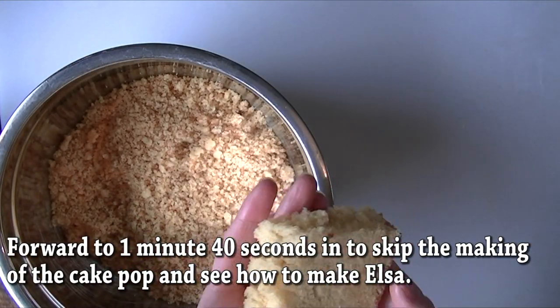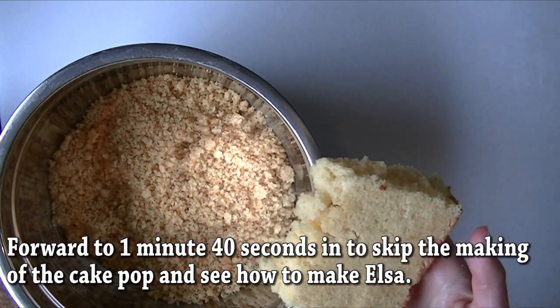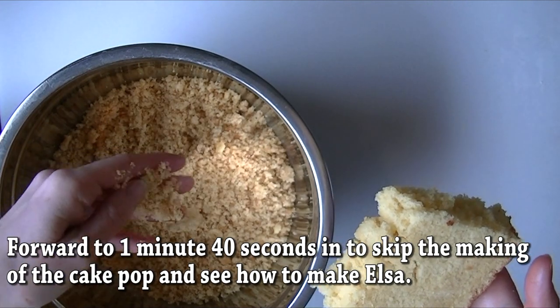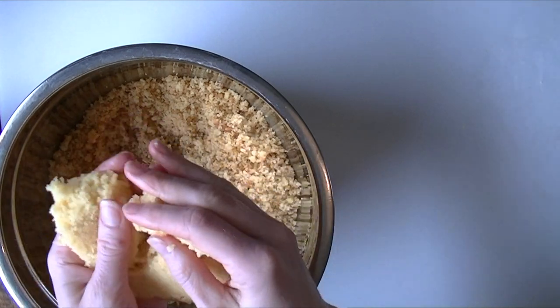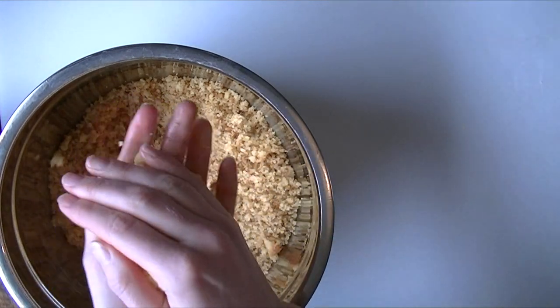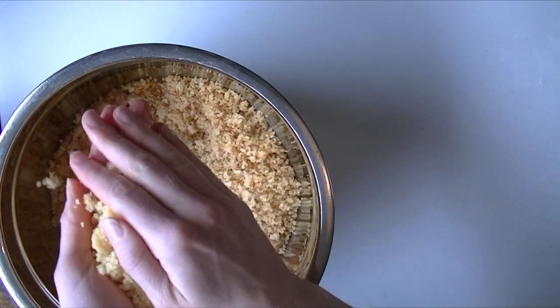So in this video we are going to make some cake pops. You don't need a lot of different things. I've basically got some sponge cake that's crumbled up. Just a normal sponge cake and you're going to crumble it up by rubbing it together in your hands until it creates breadcrumbs.